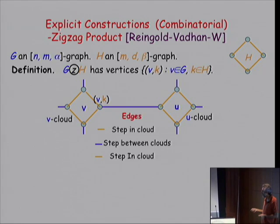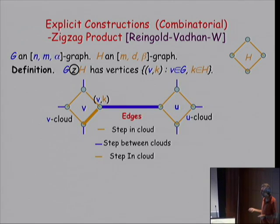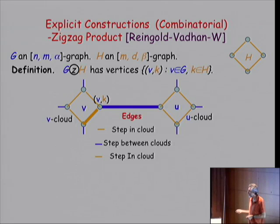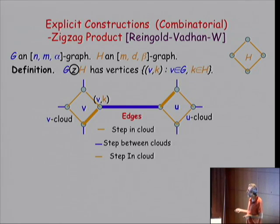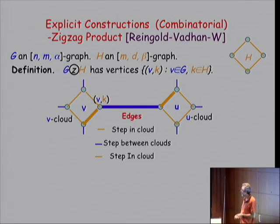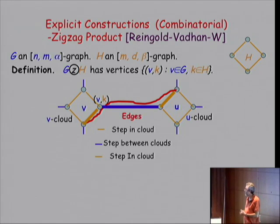The way you connect edges in the ZigZag is by a ZigZag operation: you make one step in the small cloud that the current vertex is in, then you deterministically switch to a neighboring cloud — there's only one blue edge touching every vertex — and then you make another step in that neighboring cloud. That's the ZigZag shape. These red edges compose the graph G ZigZag product H.